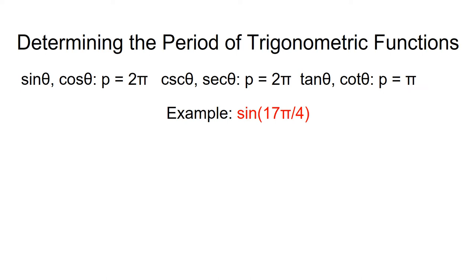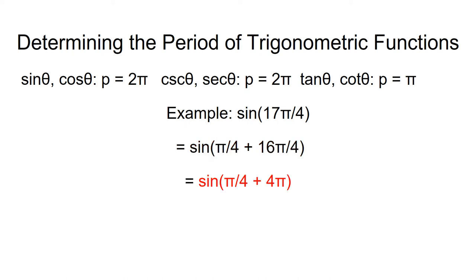For example, let's find the sine of 17 pi over 4. We can express this as sine of pi over 4 plus 16 pi over 4, which simplifies to sine of pi over 4 plus 4 pi. Since 4 pi is an integer multiple of 2 pi, we know that this function is equal to sine of pi over 4. And this equals the square root of 2 over 2.